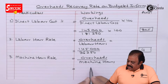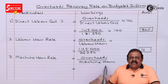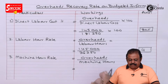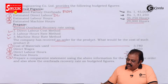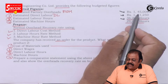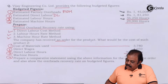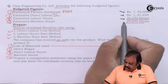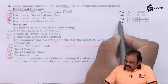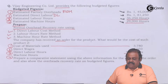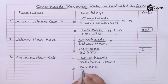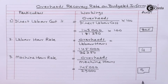For machine hour rate, overheads divided by machine hours: overheads are 1,45,000 and machine hours are 29,000 hours. So it is rupees 5 per machine hour.